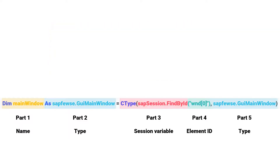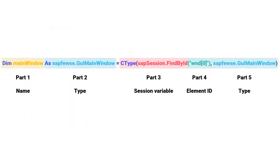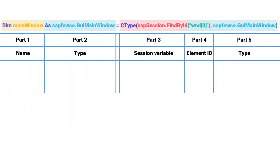I will now introduce you to the parts in detail. The first part is the name for the element — you can choose the name yourself. It is better to always put the type of the element at the beginning, then the name of the element. For example: main window, text currency, or button process open items.